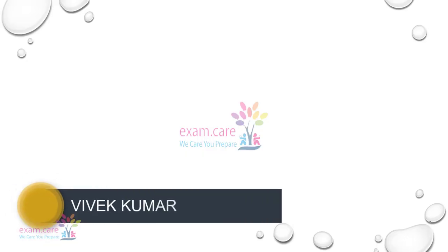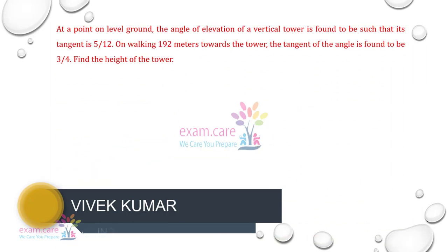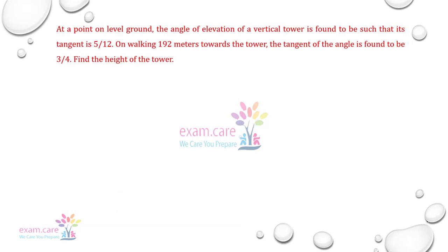Hello students. At a point on level ground, the angle of elevation of a vertical tower is found to be such that its tangent is 5 by 12. On walking 192 meters towards the tower, the tangent of the angle is found to be 3 by 4. Find the height of the tower.